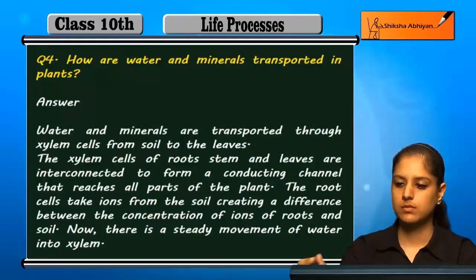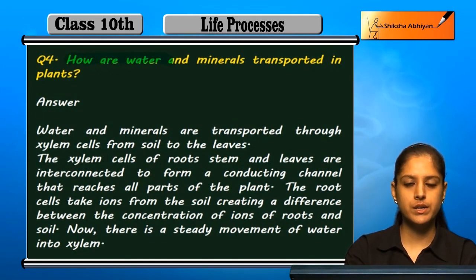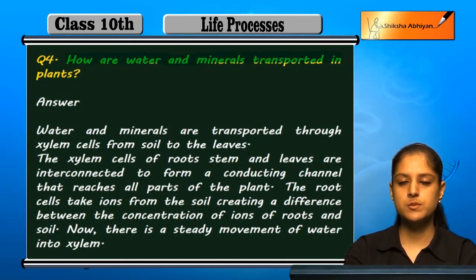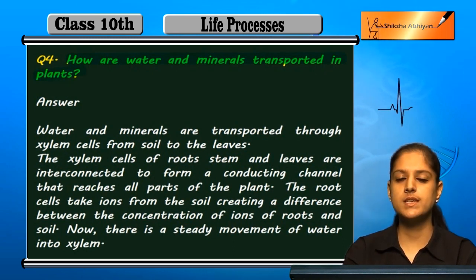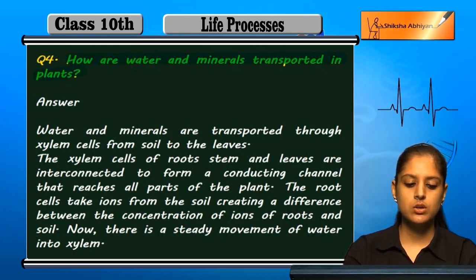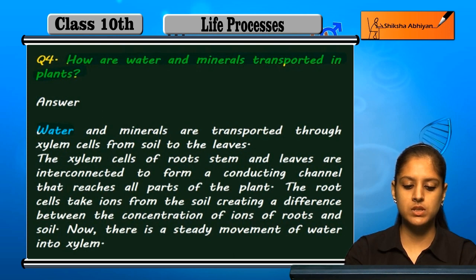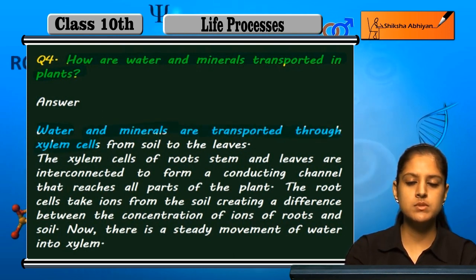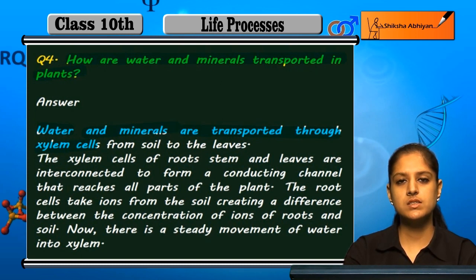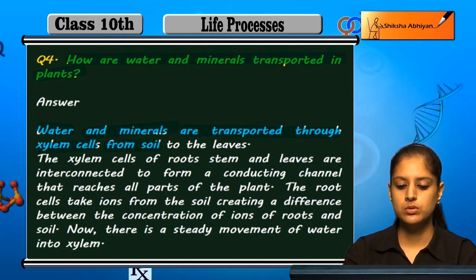Question number four: how are water and minerals transported in plants? Water and minerals are transported through xylem cells. This transport starts from the soil, through the roots, and ultimately reaches the leaves.